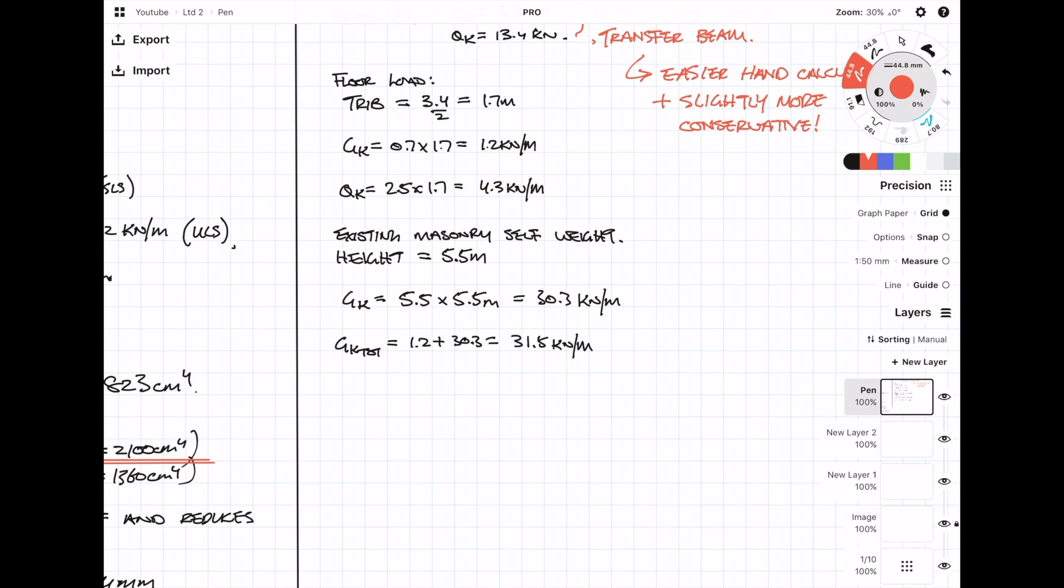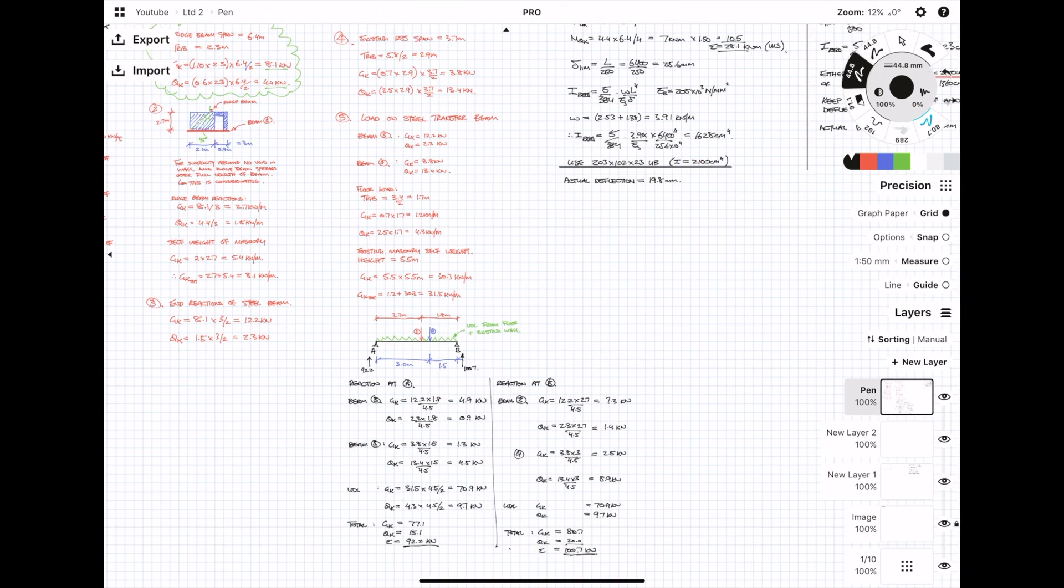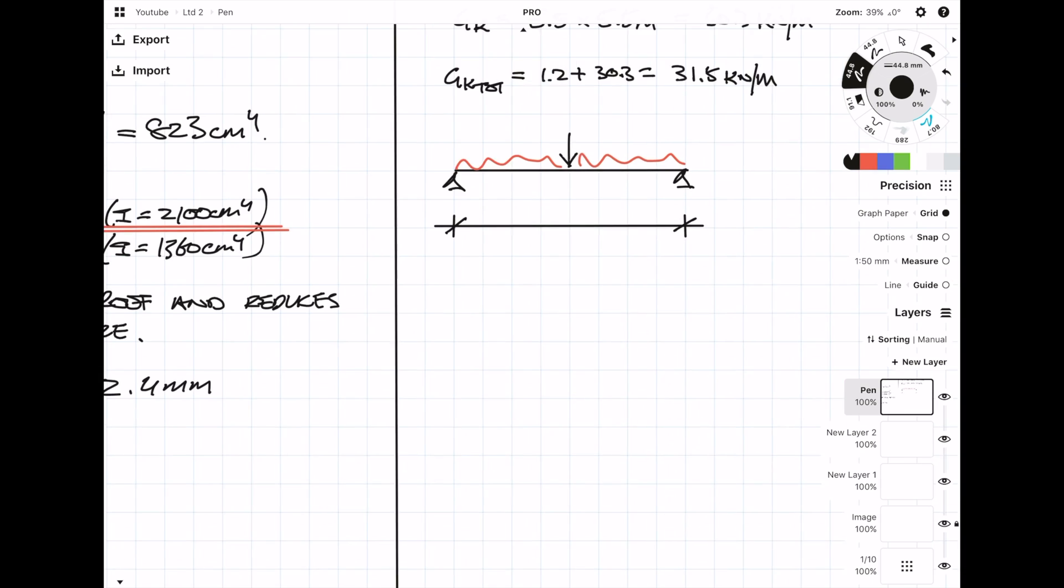Just to recap the loads which are applied to this beam: first of all, it's simply supported and it's supporting two point loads from two incoming beams. It's also supporting the timber floor from the new extension and it's also supporting the existing masonry wall, and these loads will be uniformly distributed.